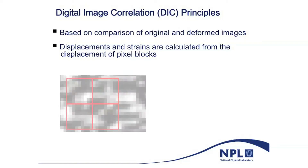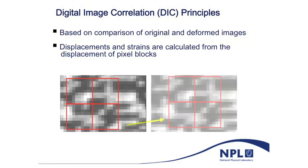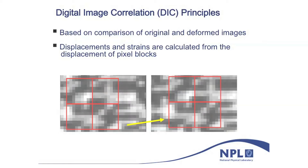We can actually analyse two photographs, which is very much a before and after kind of scenario. We can track small areas of the image as it moves from the before to the after, and from that we can actually measure how the structure has moved.